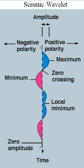A wavelet is a wave-like oscillation with an amplitude that begins at zero, increases, and then decreases back to zero. It can typically be visualized as a brief oscillation, like one recorded by a seismograph or heart monitor. Generally, wavelets are intentionally crafted to have specific properties that make them useful for signal processing.